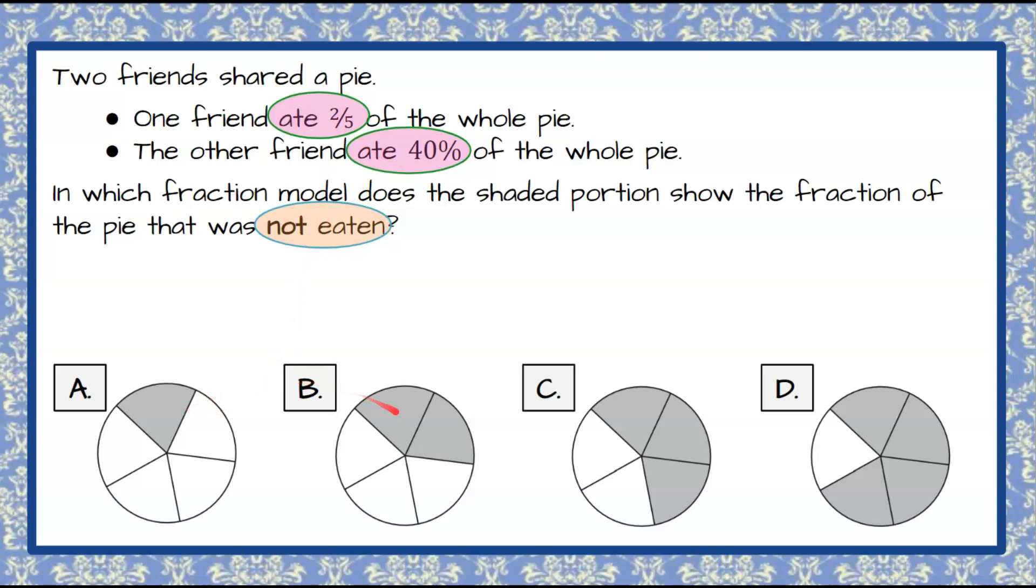So we can see that each one of these answer choices are split into five sections. They're all five equal sections, so we can see that this models our pie being sliced into five slices.